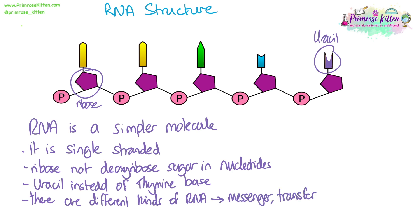There are different kinds of RNA as well: messenger RNA, transfer RNA, and ribosomal RNA. We're going to come across all of these in the course. Messenger RNA and transfer RNA are involved in protein synthesis, and ribosomal RNA is what ribosomes are made of.